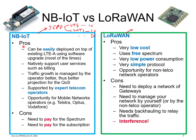Starting with NB-IoT: the pros of this technology are that it can be easily deployed on top of existing LTE infrastructure — sometimes requiring only a software upgrade on a tower with an LTE base station. It also supports user services such as billing, which is important for measuring and charging consumption. Traffic loads can be planned and managed by the operator due to dedicated spectrum access, allowing quality of service to be estimated. It is supported by expert telecom operators who have been in the market for decades.